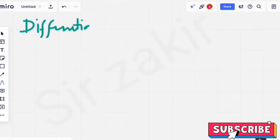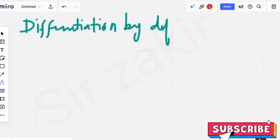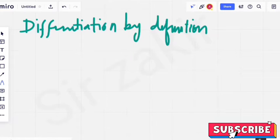Differentiation by definition. We have function y is equal to 2x square plus 1.